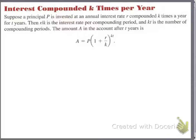Next. What happens when your interest gets compounded more than once a year? Suppose a principal P is invested at an annual interest rate R, compounded K times a year for T years. That's a lot of variables. Then, R divided by K is the interest rate per compounding period, and KT is the number of compounding periods. The amount A in the account after T years, here it is. So, this time, we are compounding more than annual.